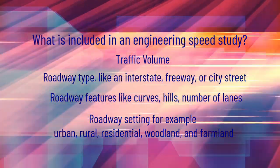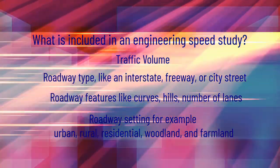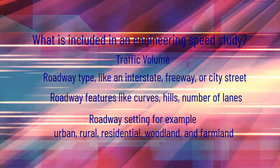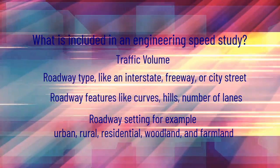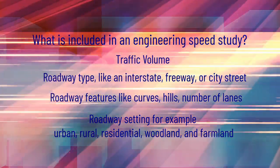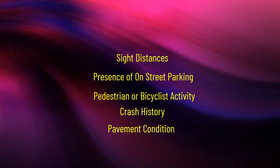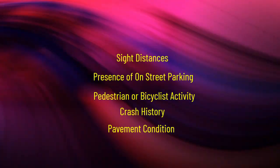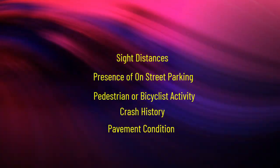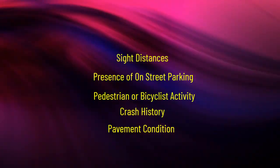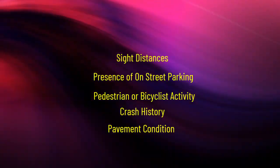Roadway setting — for example, urban, rural, residential, woodland, and farmland. Site distances. Presence of on-street parking. Pedestrian or bicyclist activity. Crash history. Pavement condition.